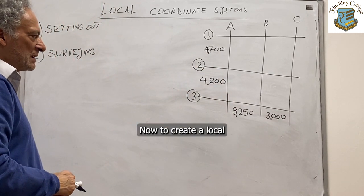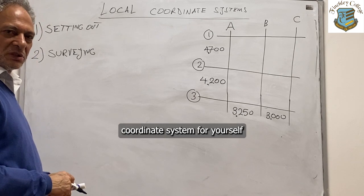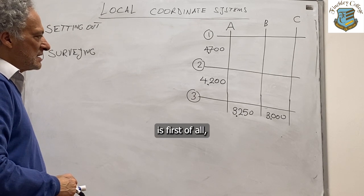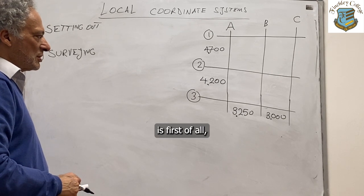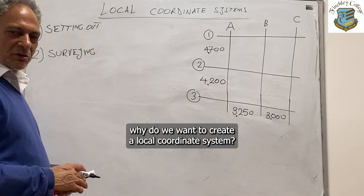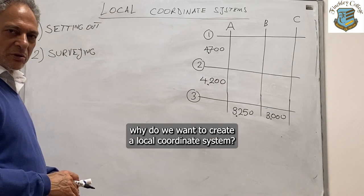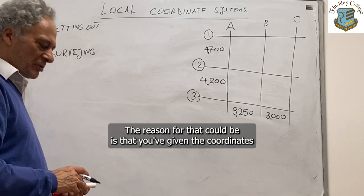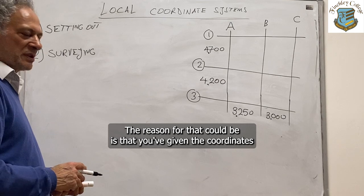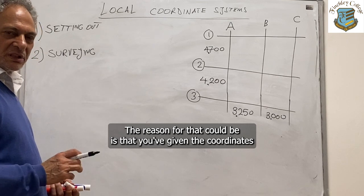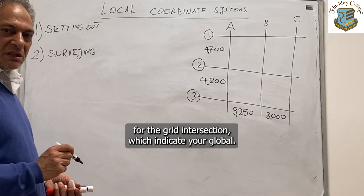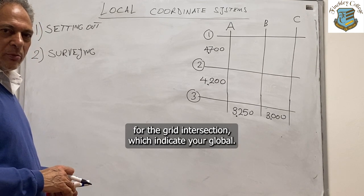Now to create a local coordinate system for yourself — first of all, why do we want to create a local coordinate system? The reason could be that you've been given the coordinates for the grid intersection, which are indicated as global.